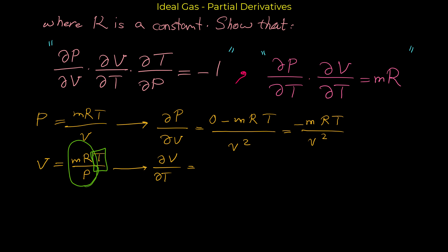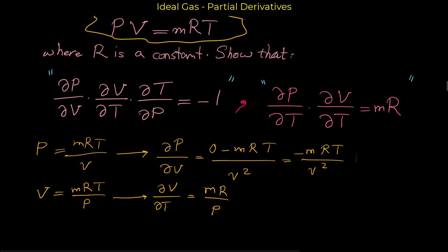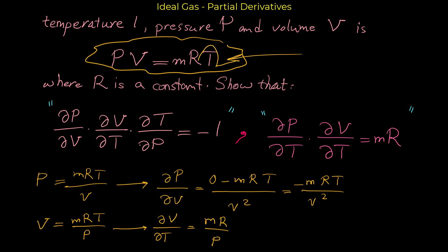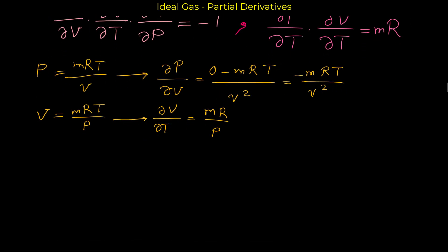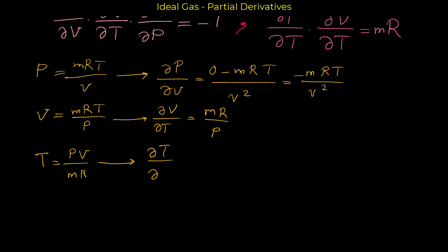So the partial derivative of v with respect to t is mR over p. Now finally we want to find the partial derivative of t with respect to p. Using the given relation, we solve for t: t equals pv over mR — we divide both sides by mR. The variable p is only in the top, so all of v over mR is a coefficient. The partial derivative of t with respect to p is v over mR.